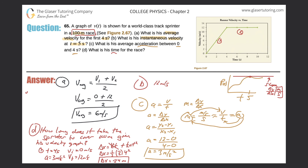At four seconds, he traveled 24 meters. Since it's a 100-meter race, we take 100 minus 24 to find how much he has left: 76 meters. So he's got 76 meters left to go.